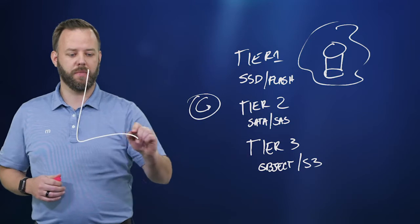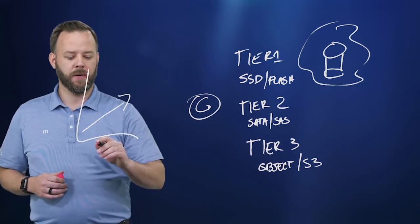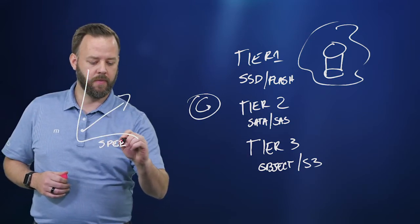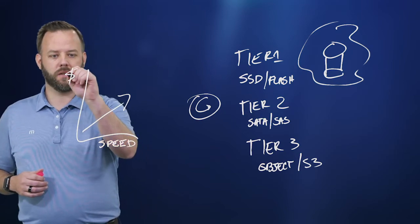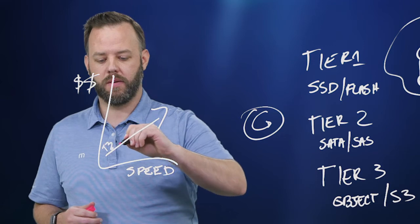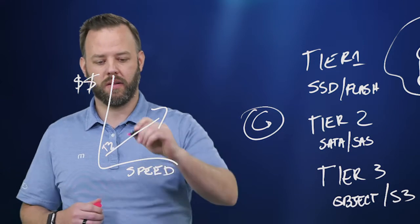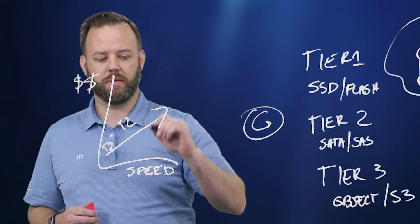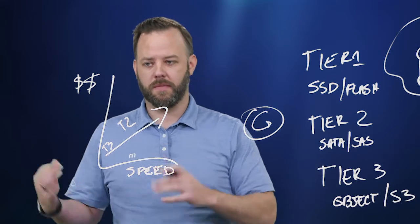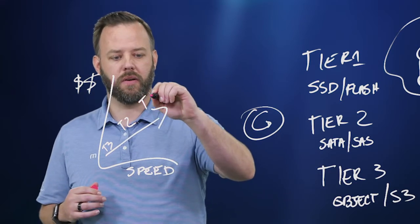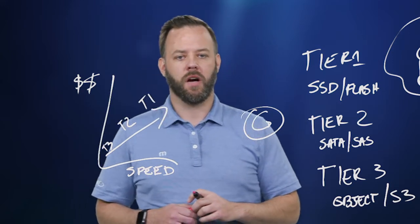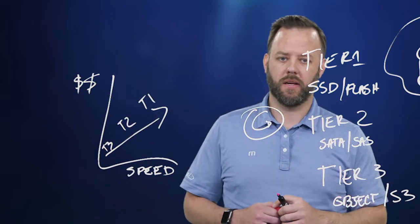In terms of cost, if you draw a basic X-Y axis with speed on one axis and dollars on the other, tier three sits at the bottom — least expensive and slowest. Tier two is in the middle — medium price, medium speed. And tier one is at the top — the fastest and the most expensive.